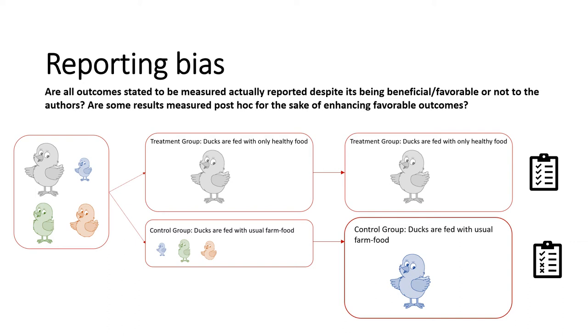Another type of bias is reporting bias: are all outcomes stated to be measured actually reported, regardless of whether they are favorable to the authors? Or are some results measured post hoc for the sake of enhancing favorable outcomes?